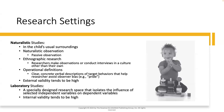Moving on to research settings — there are two main research settings that research with infants will take place in. The first is naturalistic studies or settings, and the other is laboratory studies or settings. Naturalistic studies take place in the child's usual surroundings — home, school — where the child is comfortable. There are different types of naturalistic studies, including naturalistic observation, which is passive observation where the researcher is kind of just like a fly on the wall watching the child do its thing.